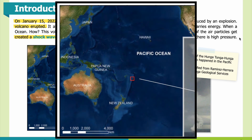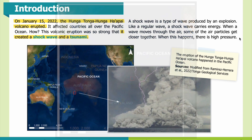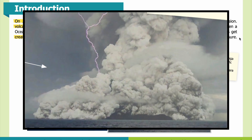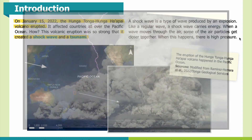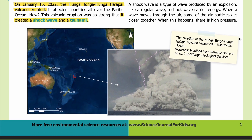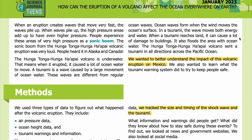In the left image you can see a map of the Pacific Ocean. The location of the volcano can be identified by a red square. The image on the right shows what the eruption looked like. When an eruption creates waves that move very fast, the waves pile up. When waves pile up, the high-pressure areas add up to have even higher pressure.